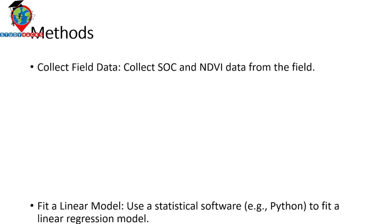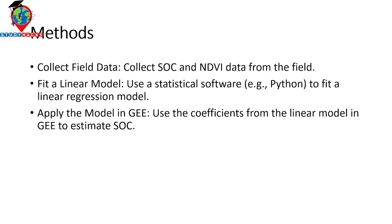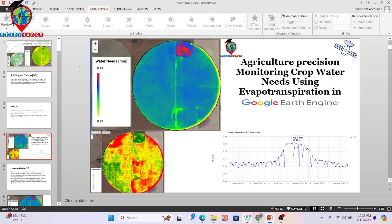Then we apply a linear fit model. Using Python, we find the linear fit using a linear regression model and calculate the intercept value as well as the slope value. From that, we can apply the coefficients in Google Earth Engine to estimate the soil organic carbon. Let's go — I will try to explain all of those things practically so we can easily get this idea.